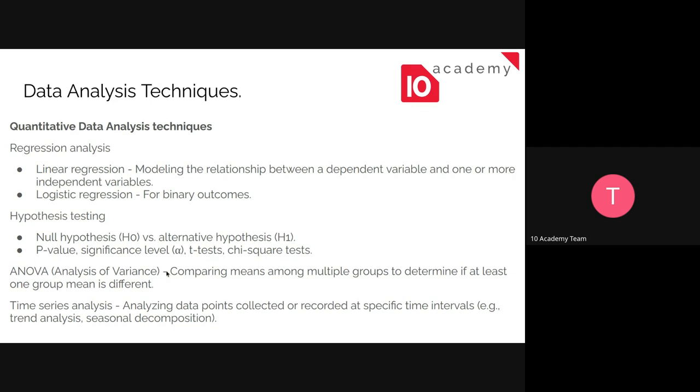ANOVA, I know that you might not have to do these three things for this project, but it's good to know. So the ANOVA is just comparing the means among multiple groups just to find the least one. And time series is just analyzing data points collected in specific time intervals. So we can do window analysis, from this time to this time, what happened, and so on, just to find the trends.